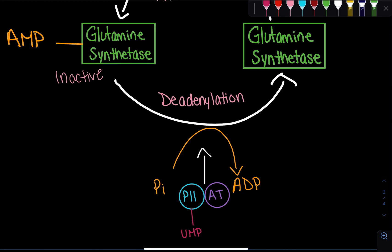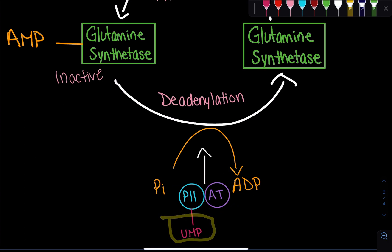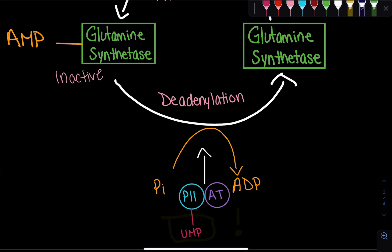The enzyme used for de-adenylation is the same enzyme — adenyl transferase — once again bound to P2. But this time, the P2 has a UMP bound, meaning it has been uridylylated.